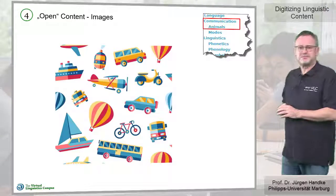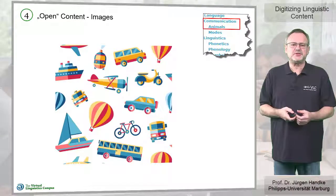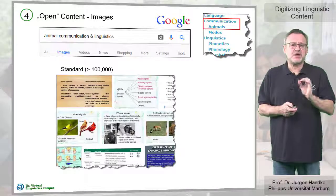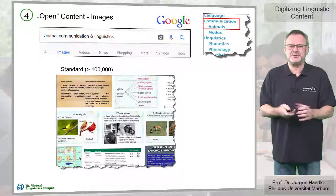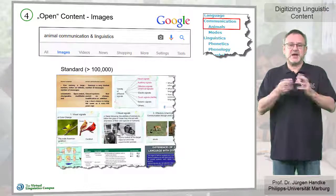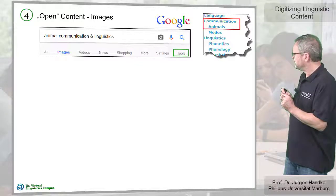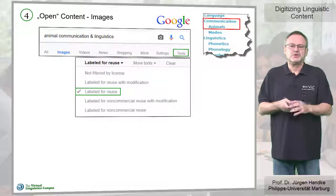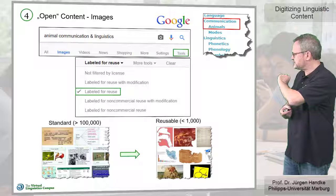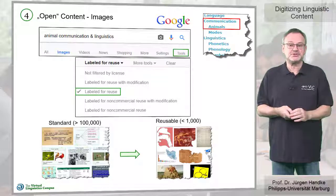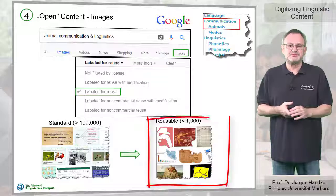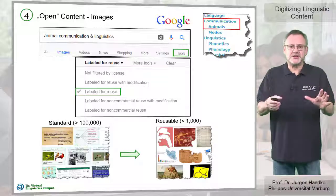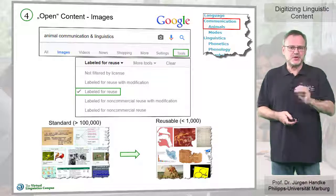Let's look at images next. The number of images associated with a search term is normally overwhelming. However, most images are copyright protected and cannot be used freely. But if you activate the tools menu and apply the special filter labeled 'for reuse', you can confine your search to those images that are hot candidates for free usage. But even these images might not be ready for use and need to be checked carefully. So whatever results you get, make sure the copyright is not violated.